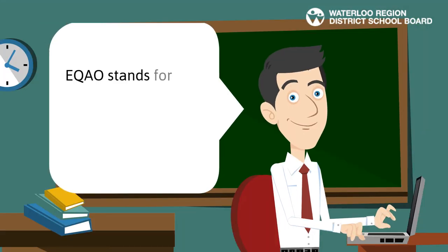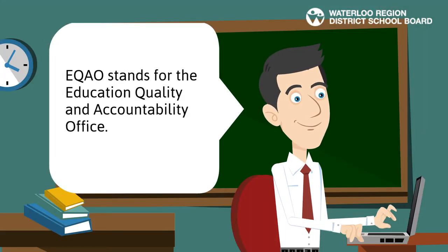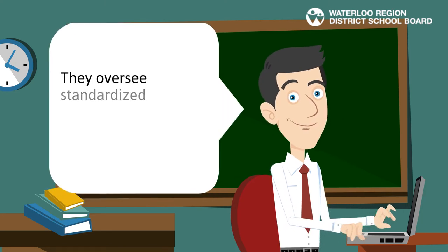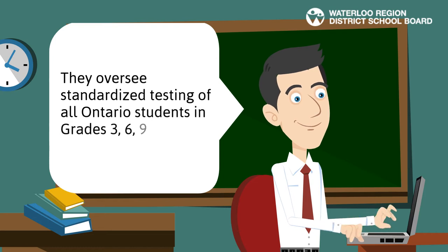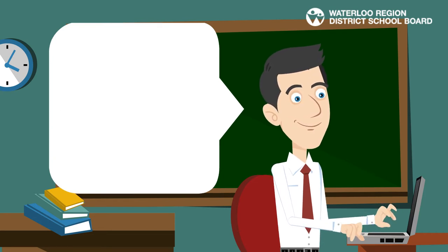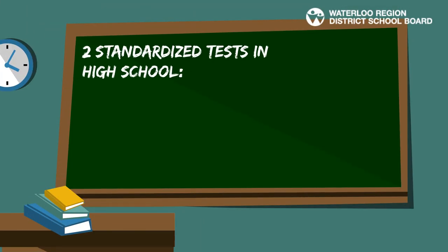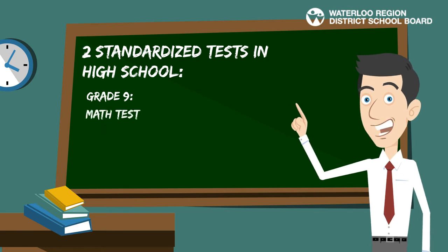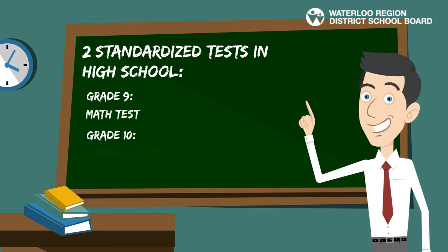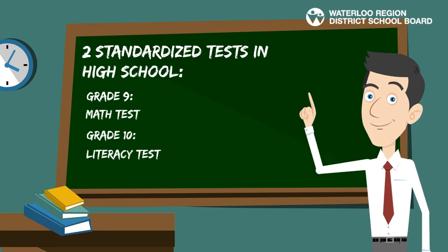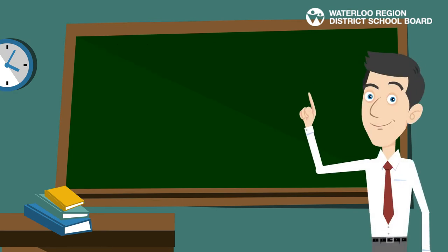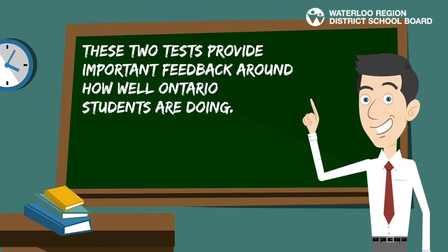EQAO stands for the Education Quality and Accountability Office. They oversee standardized testing of all Ontario students in grades 3, 6, 9, and 10. High school students take a math test in grade 9 and a literacy test — reading and writing — in grade 10. These two tests provide important feedback around how well Ontario students are doing.